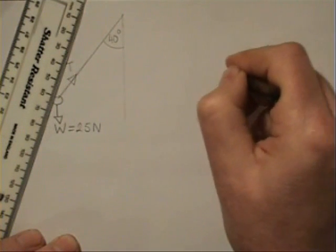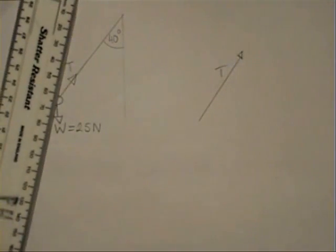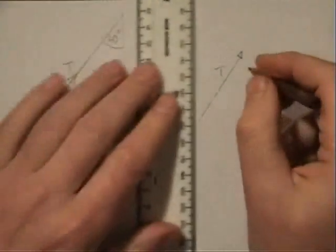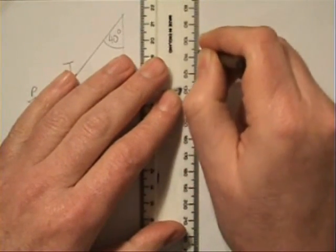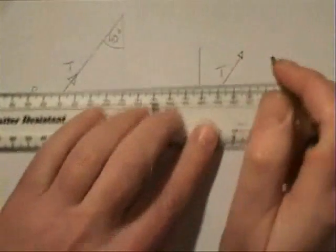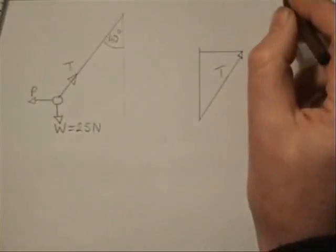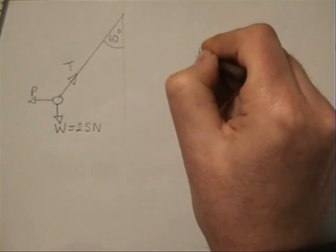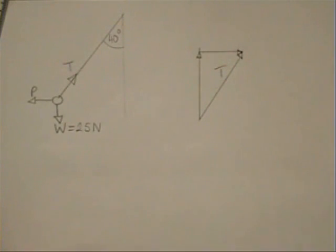So there's the vector that represents T. So I can easily find its horizontal and vertical components. I've completed a triangle.